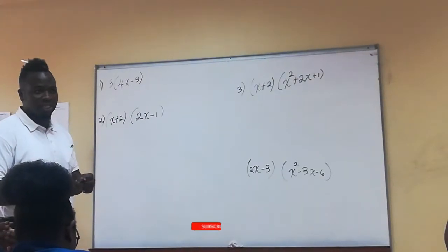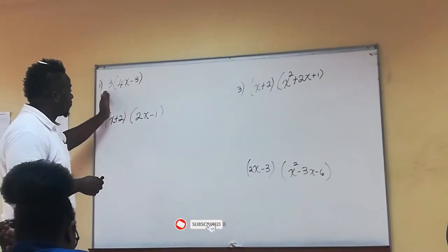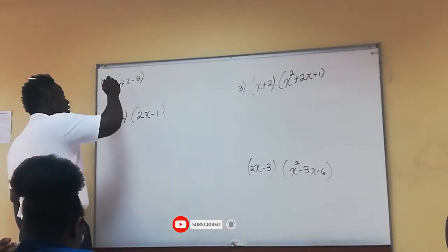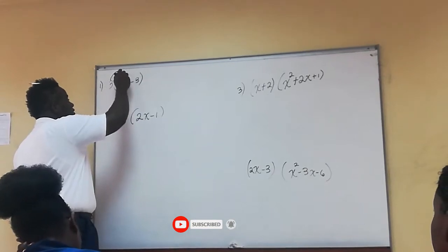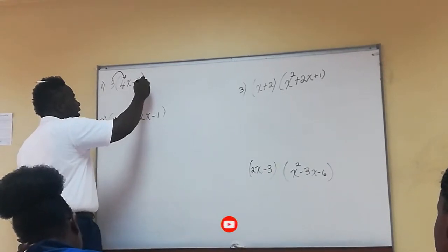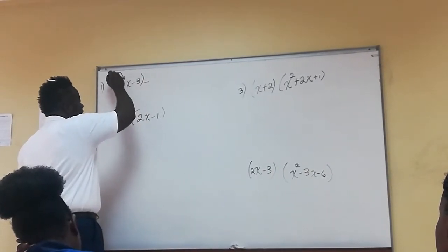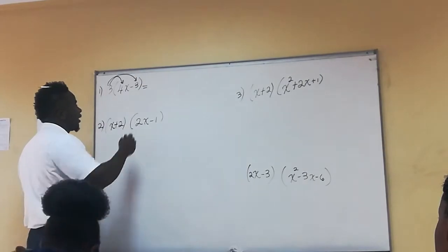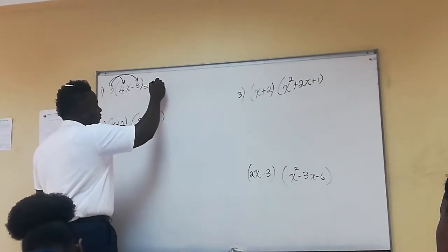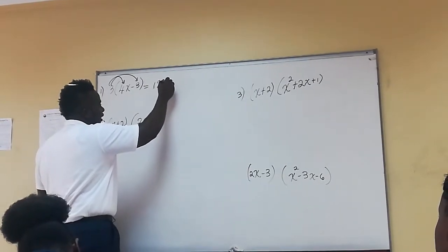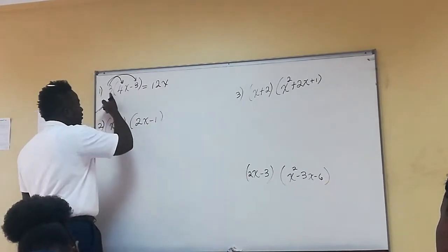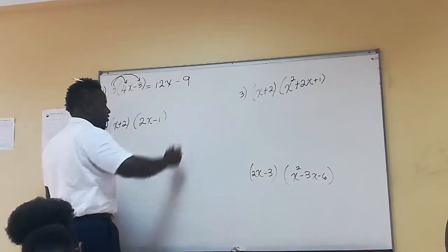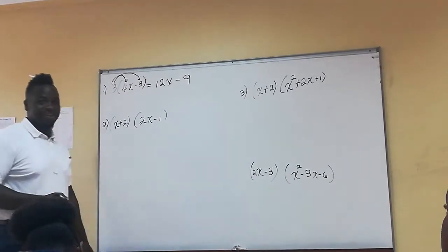Simple multiplication — we multiply what's outside by everything inside. So for this first one, we're going to say three times four x, then three times minus three. Three times four x gives us twelve x, and three times minus three gives us minus nine.